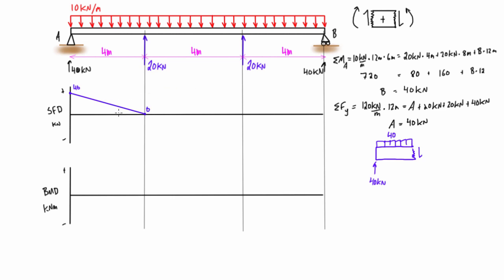If we extend our free body diagram just to the right of this first point load, we're adding on 20 kilonewtons pressing up. So we have 40 up and 40 down netting to zero, plus 20 up, meaning the internal shear force must be 20 pressing down for equilibrium. The shear force jumps up to positive 20.